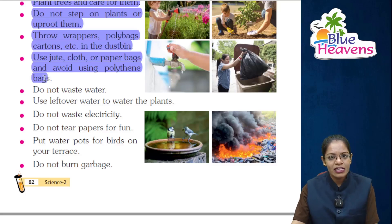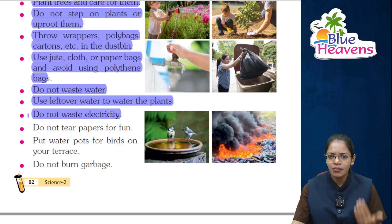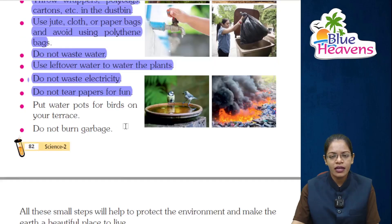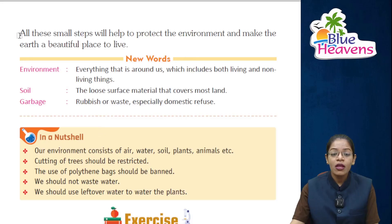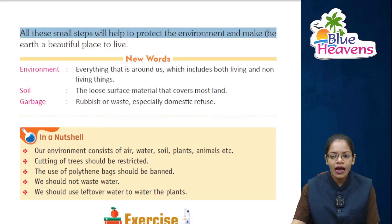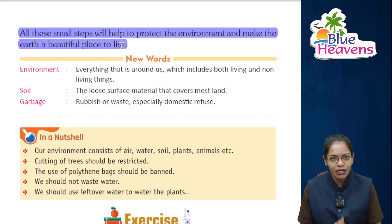Do not waste water. Use leftover water to water the plants. Do not waste electricity — use only as much as you need. Do not tear papers for fun. Put water pots for birds on your terrace. Do not burn garbage. All these small steps will help protect the environment and make the earth a beautiful place to live.